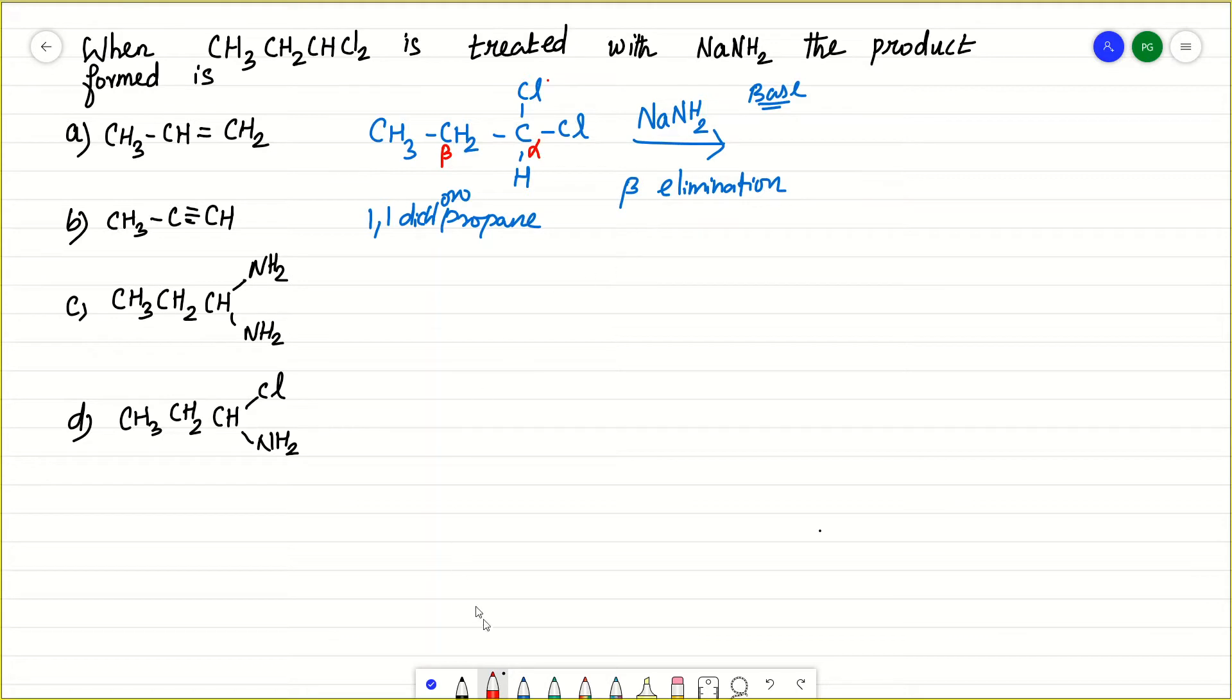This is dehydrohalogenation. Dehydrohalogenation means what? One hydrogen and halogen is removed. Here, this Cl and one hydrogen is removed. Again, this Cl and another hydrogen is removed.